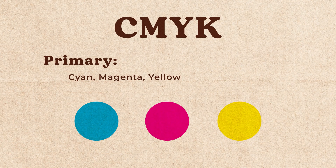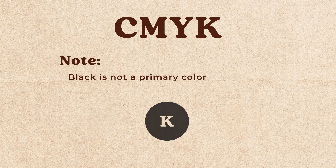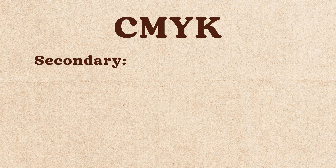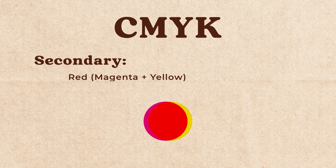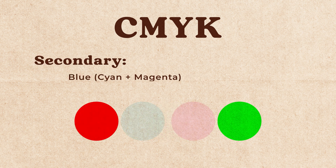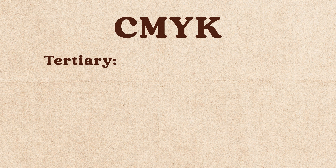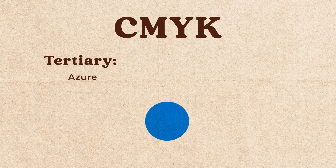For the CMYK method, the primary colors are cyan, magenta, and yellow — remember, black is not a primary color. The secondary colors are red, green, and blue. The tertiary colors are orange, chartreuse, spring green, azure, violet, and rose.